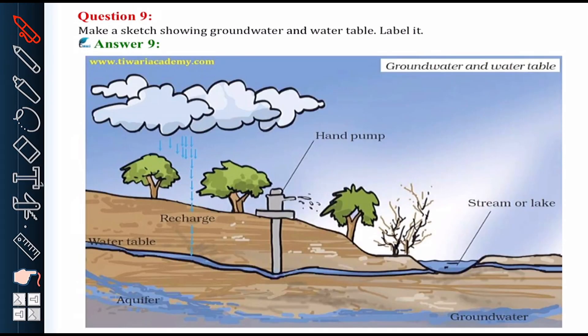Next is question number 9: you have to sketch ground water and the water table. This is also given in your NCERT textbook, so it is very important and you should remember it well.